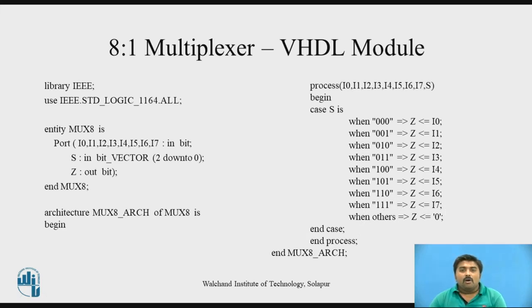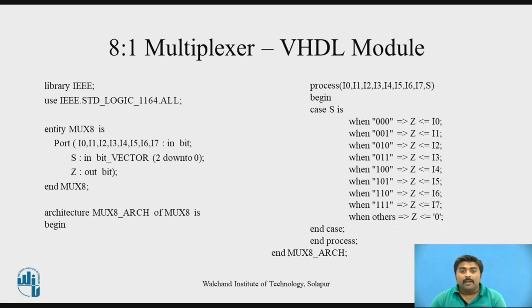If the select line is not among the listed combinations, we write 'when others', and in that case Z is assigned 0 directly. After the case statement is complete, we write 'end case'. Once done with the case statement we end the process with 'end process', and then write 'end architecture'.